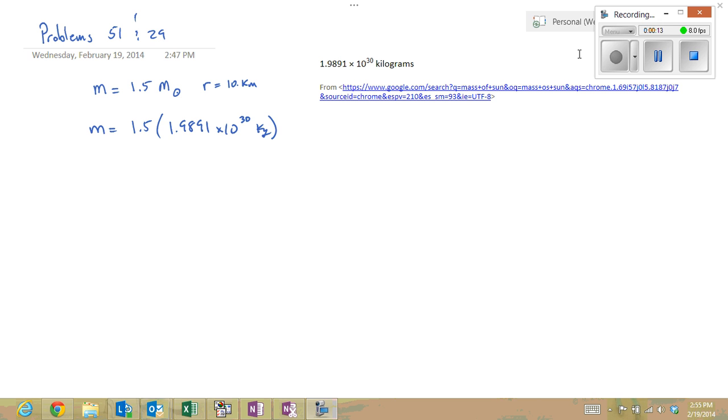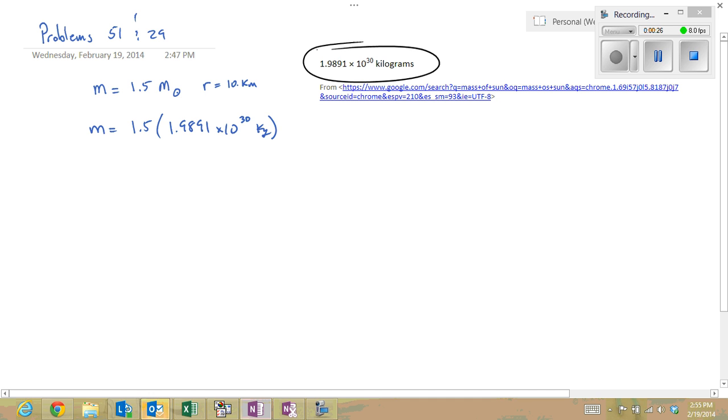We were told that the mass of the star is 1.5 times the mass of the sun, so here I looked up the mass of the sun on Google, and here it is right here. And so our mass is going to be 1.5 times that, so it is going to equal 2.984 times 10 to the 30th kilograms.